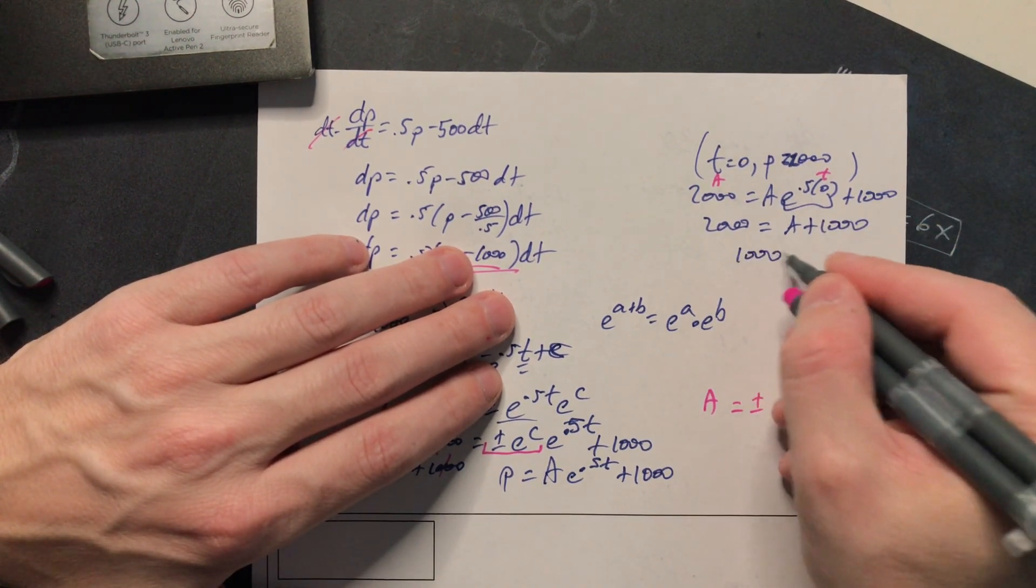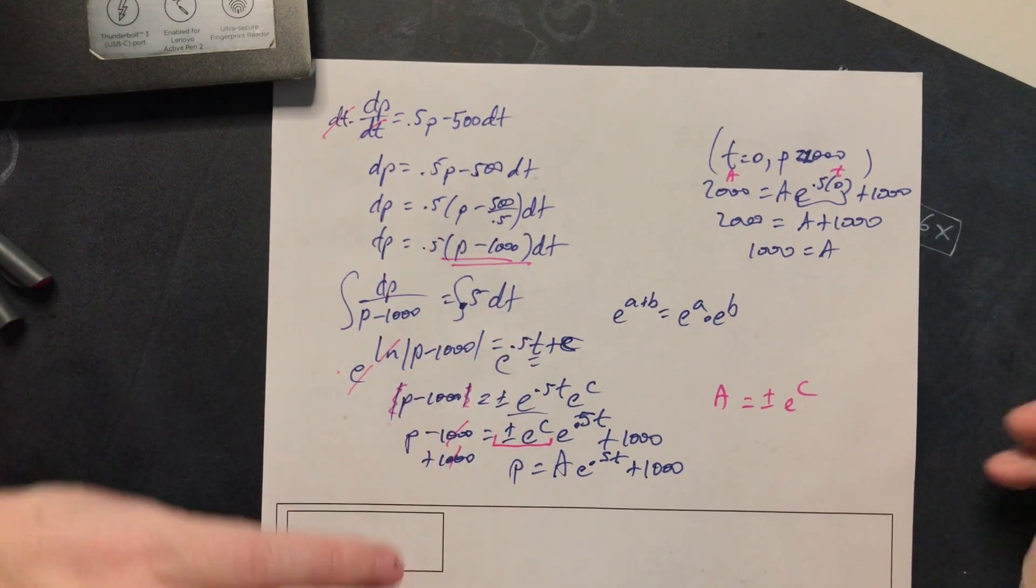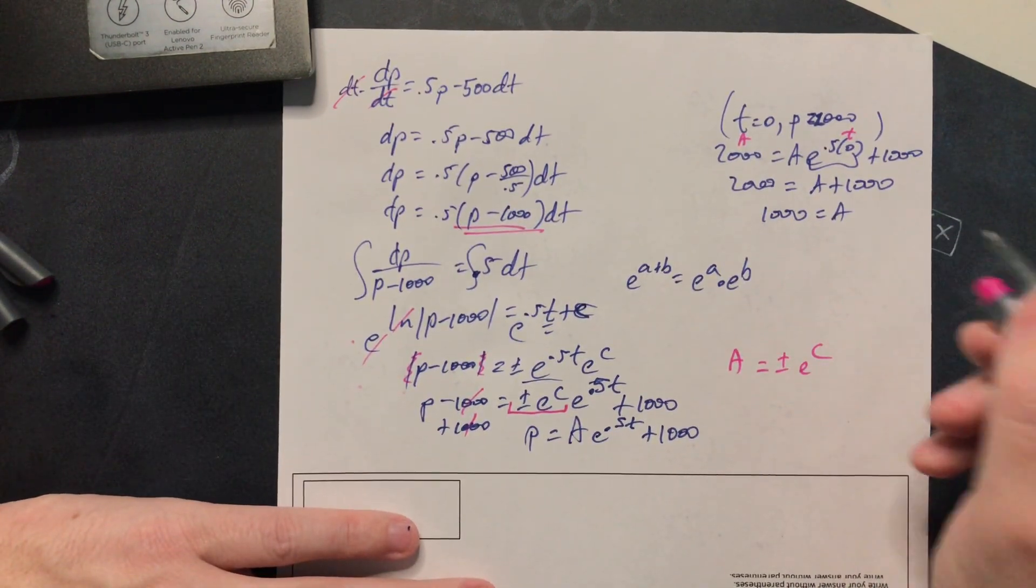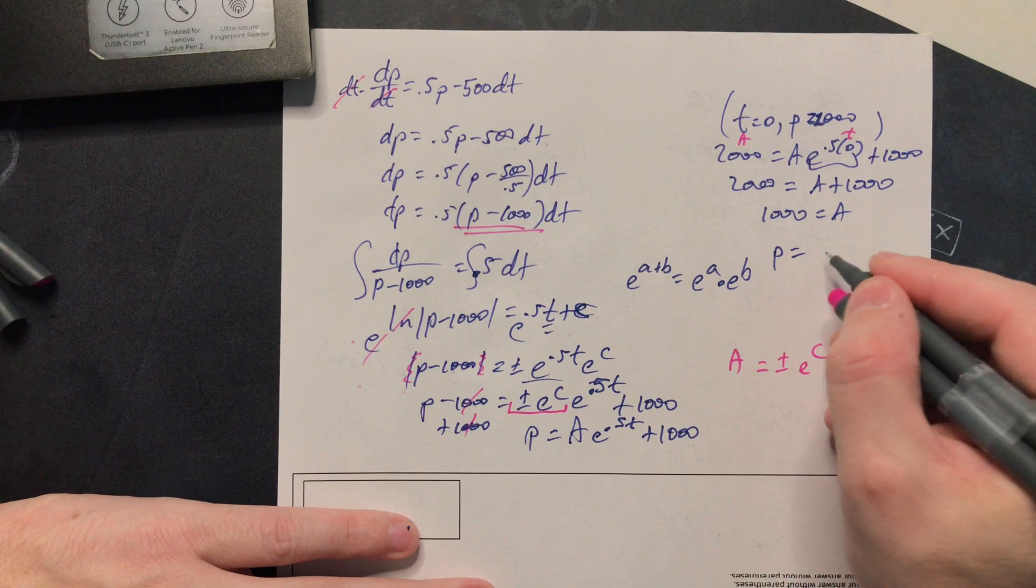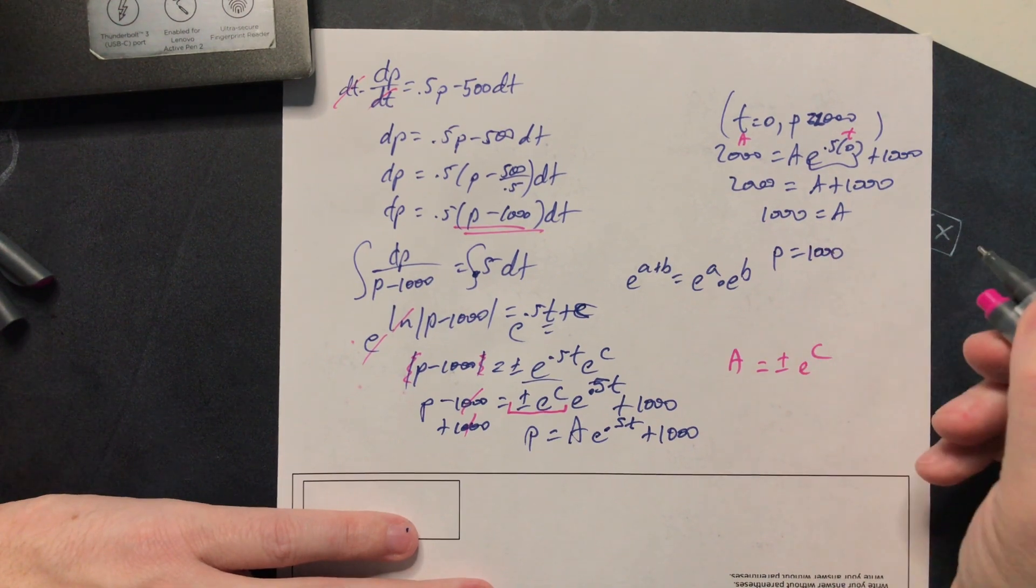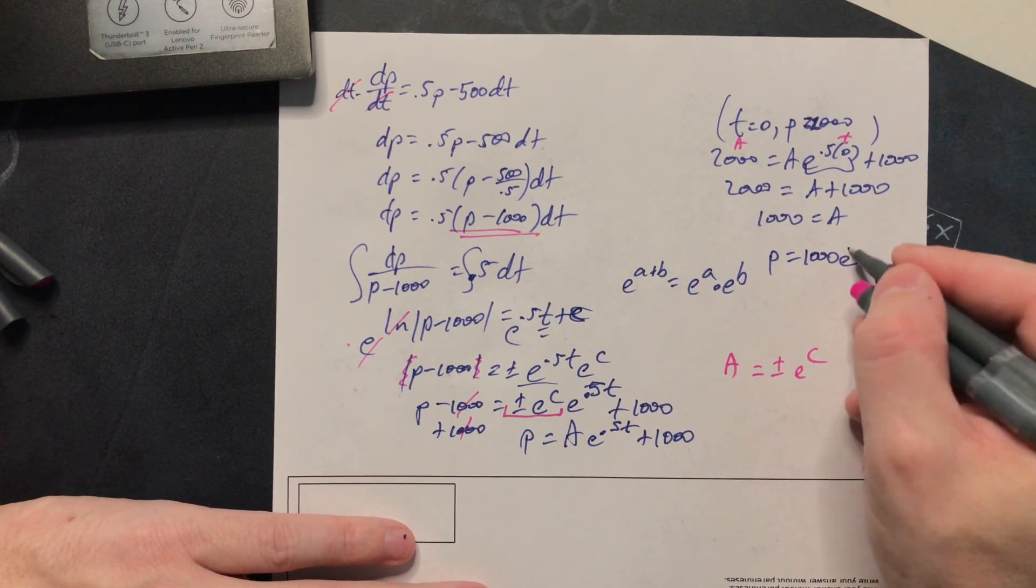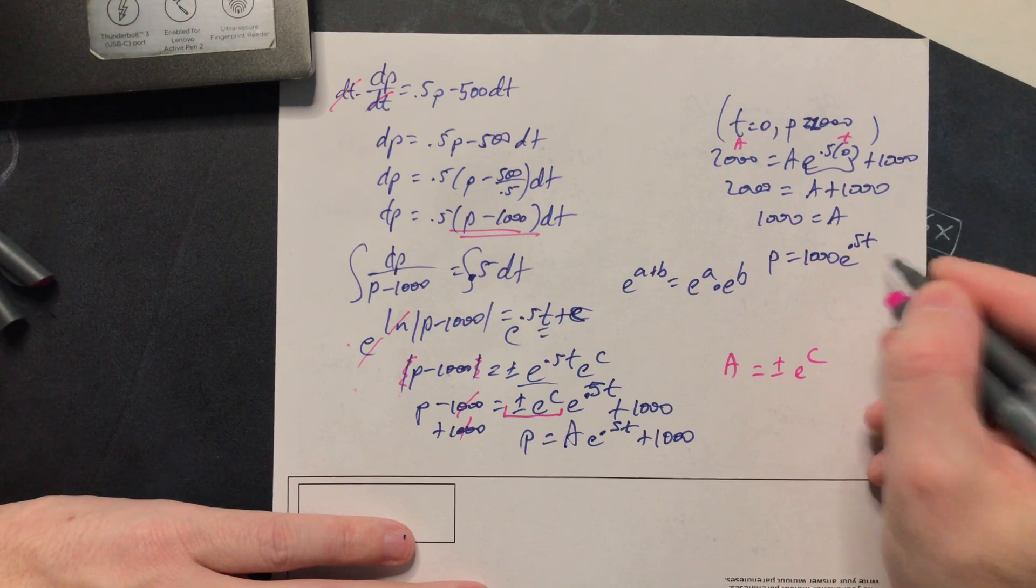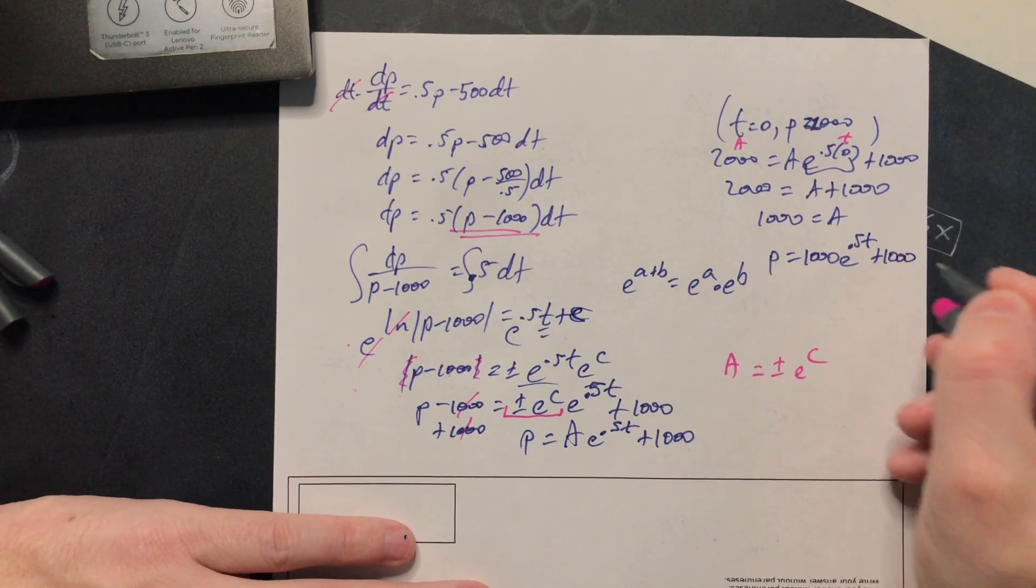Subtract 1,000. So that's the value of a. In other words in this case the equation would be specifically p is equal to 1,000 e raised to that 0.5 t plus 1,000.